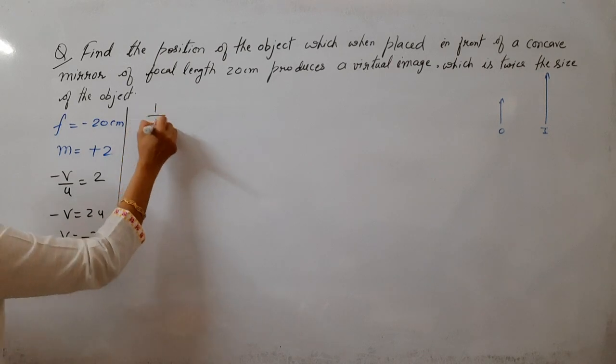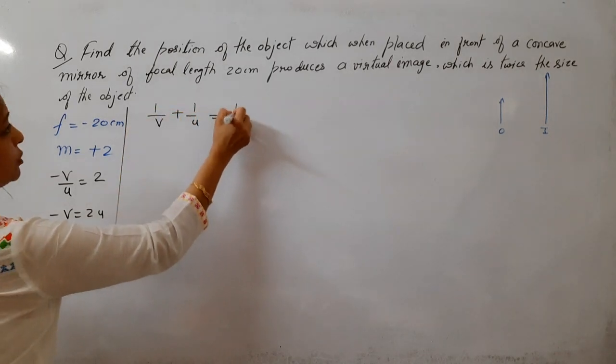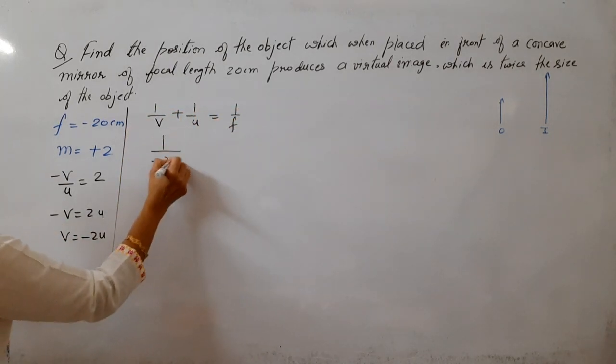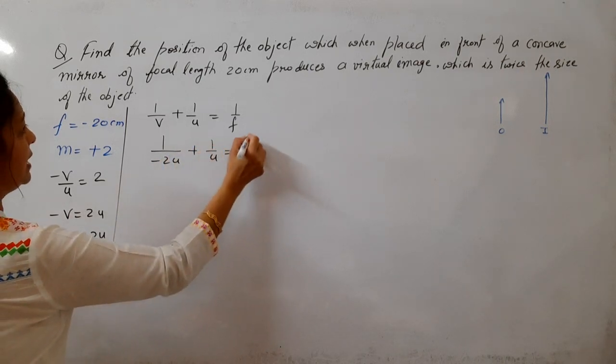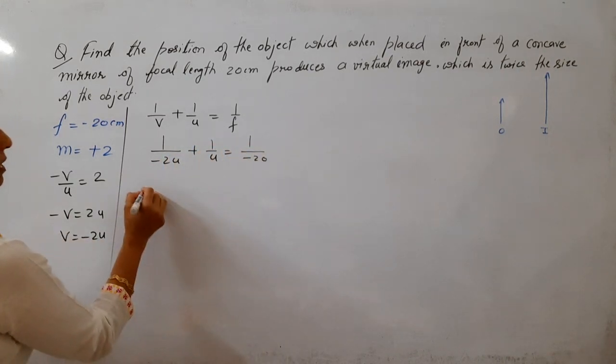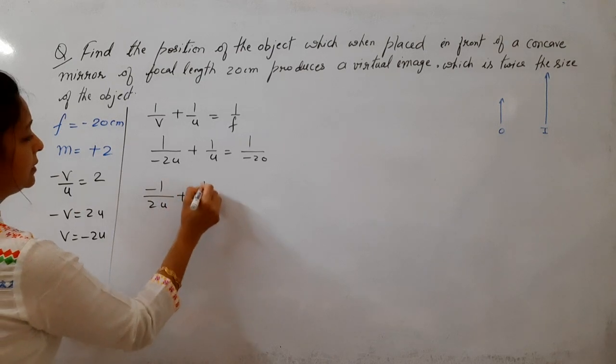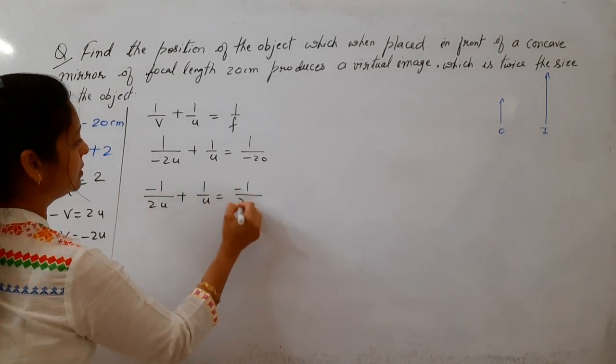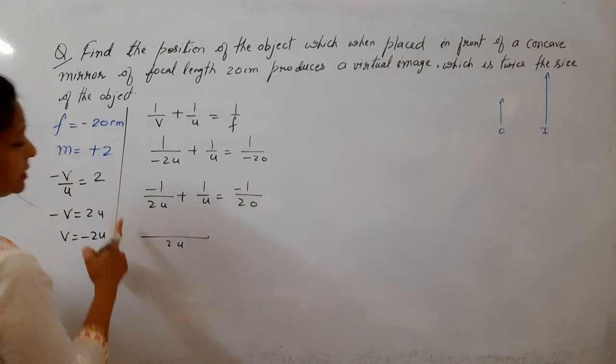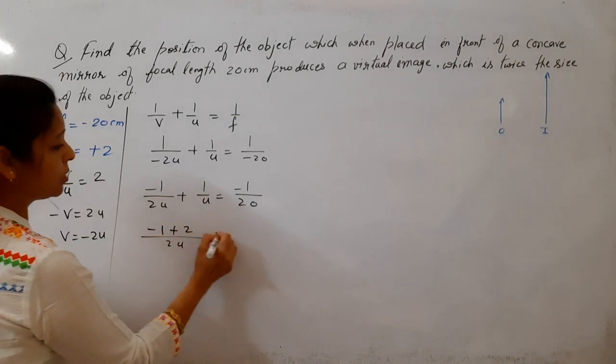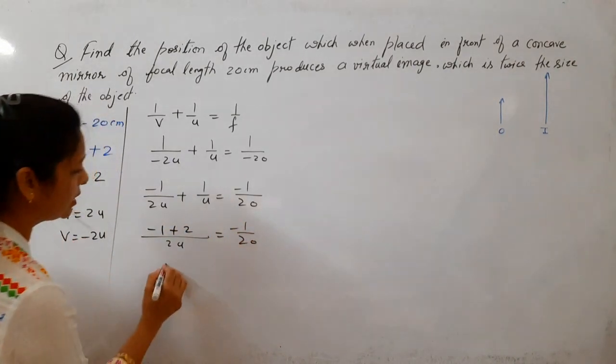Ab aap mera formulae mein laga dijiye isko. 1 by v plus 1 by u equal to 1 by f. V is minus 2u. And f is minus 20. Negative sign ko hum sab se pehle upar daal dete hai. Taaki hum LCM le paaye. Aga hum 2u LCM le lete hai. Yaha par ho jayega minus 1 and yaha hooga plus 2. That is minus 1 by 20.